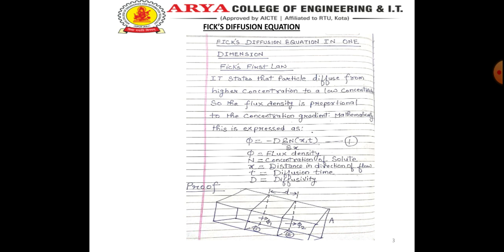Our next topic is Fick's Diffusion Equation in one dimension. Fick's First Law states that particles diffuse from higher concentration to lower concentration, so the flux density is proportional to the concentration gradient. Mathematically, this is expressed as: Φ = −D · ∂N(x,t) / ∂x, where Φ is the flux density, N is the concentration of solute, x is the distance in the direction of flow, t is the diffusion time, and D is diffusivity.